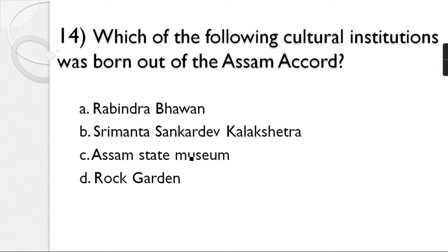Question number 14: Which cultural institution was born out of the Assam Accord? Options: Rabindra Bhavan, Srimanta Sankardeva Kalakshetra, Assam State Museum, Rock Garden. The correct answer is option B — Srimanta Sankardeva Kalakshetra.